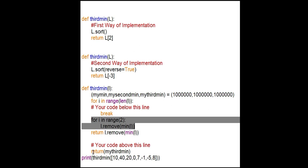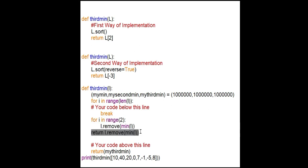I will return the value over here, so the interpreter will never execute the line below. By executing this return, it will return the value of the third minimum element and we will be done with our job.